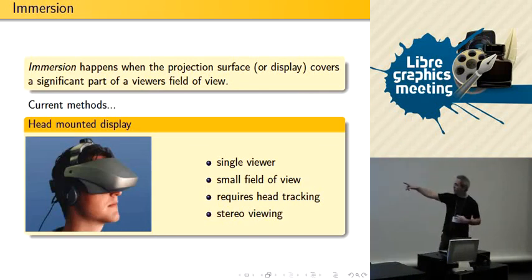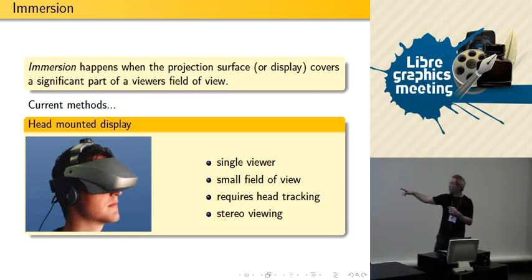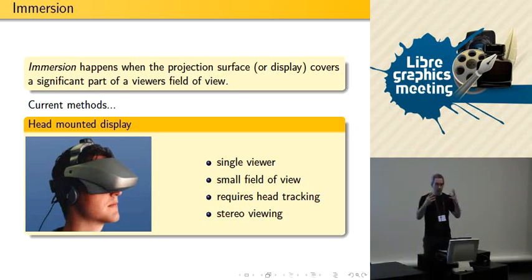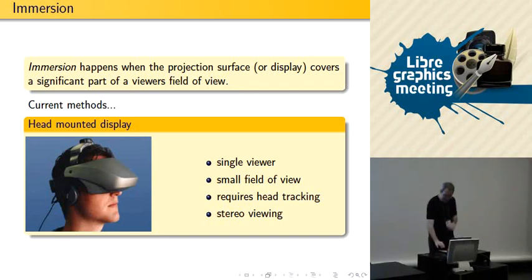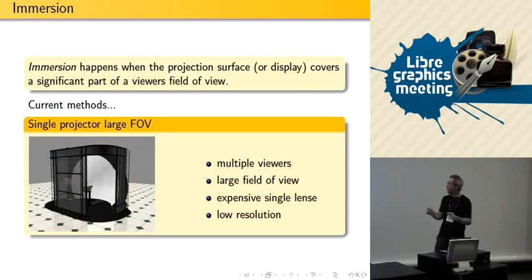You probably know about these kinds of things. When you want to immerse people in large screens, instead of a huge screen you can use a tiny screen in front of your eyes. The problem is it's for a single viewer, kind of expensive, and has a limited field of view. Also, you don't see the real world, so you can trip and fall and hurt yourself. Another way to do immersive displays is to use big curved screens with a single projector with a wide-angle lens — a couple of people can see at the same time, but it tends to be low resolution.